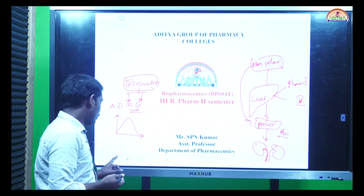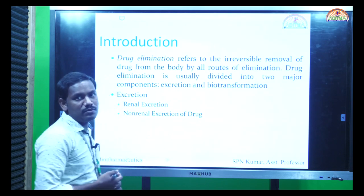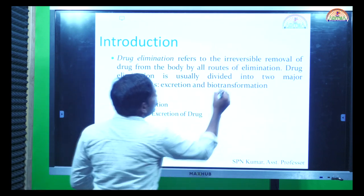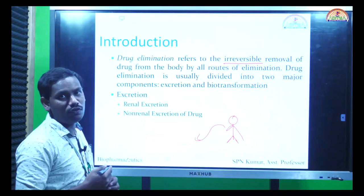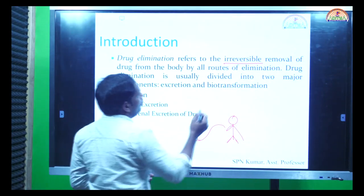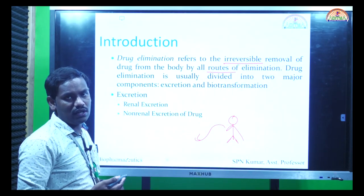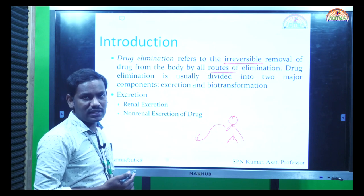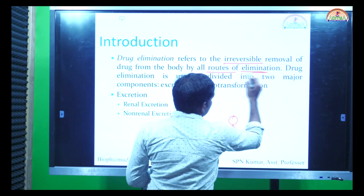Today we are going to see all these elimination aspects, focusing specifically on renal excretion. Drug elimination refers to the irreversible removal of the drug — once the drug is removed from the body, it is completely gone and not coming back. Irrespective of the route of administration, the kidneys and other eliminating organs like skin and liver are going to eliminate the drug through all possible routes — through the skin, lungs, or sweat pores.